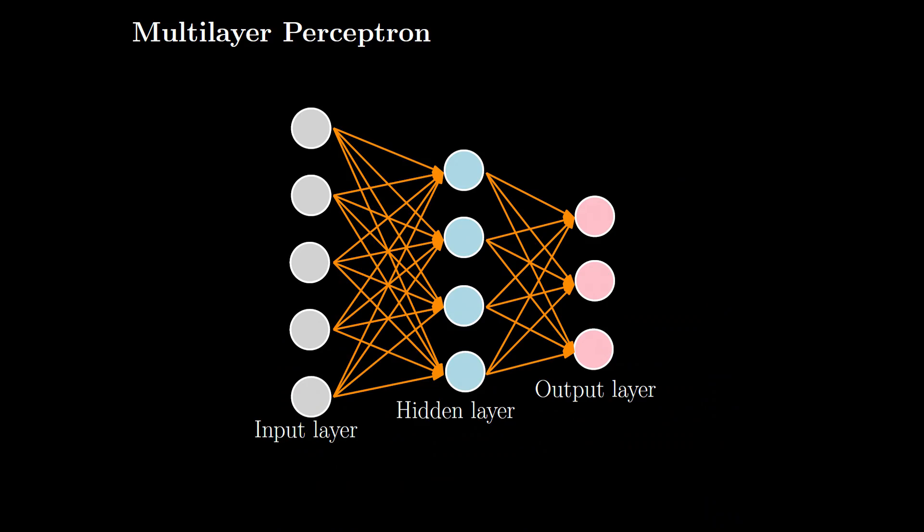Let us first look into classifying these images using multilayer perceptron. The general architecture of multilayer perceptron has an input layer and an output layer. For simplicity, let us consider a single hidden layer. In our case, we have inputs of size 32 × 32, and since we have 3 channels, the total input size would be 32 × 32 × 3, and the number of neurons in the output layer would be 10 because we have 10 classes.